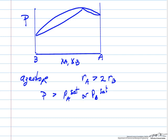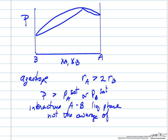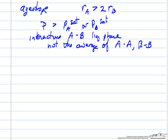So that means the interactions between A and B in the liquid phase are not the average of interaction between A and A or B and B. And the fact that we have an azeotrope says they're quite a bit less than that.